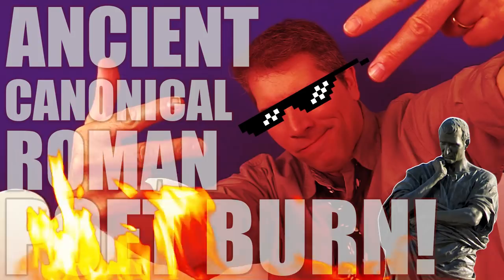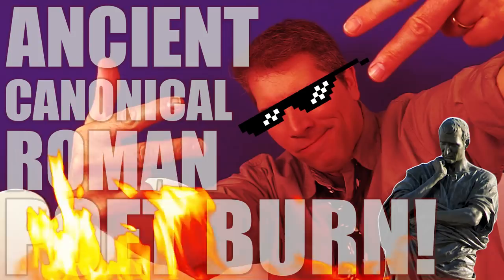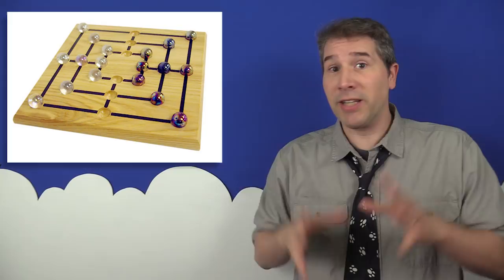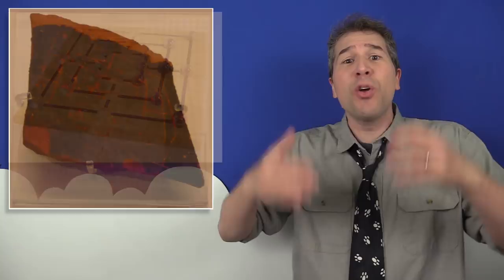But the most interesting thing about Nine Men's Morris isn't that it was apparently the prehistoric version of Tinder, but that it appears in so many unexpected places throughout the ancient world. For example, the earliest known board for the game was actually cut into the roofing slabs of the temple at Kurna in Egypt around 1400 BC. But that's not all.